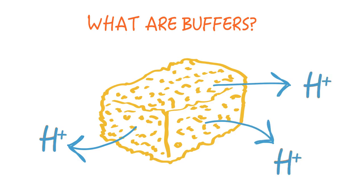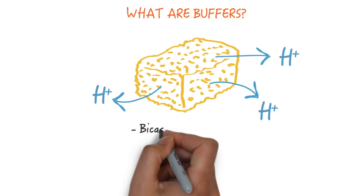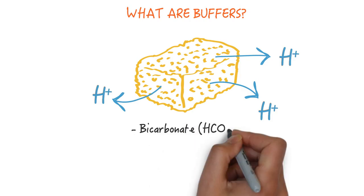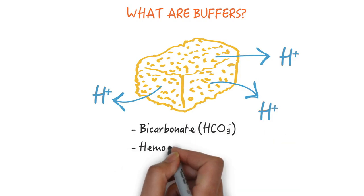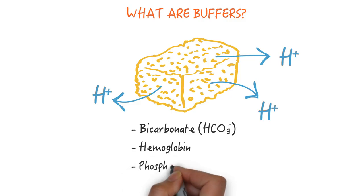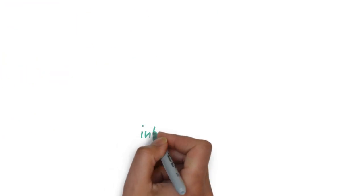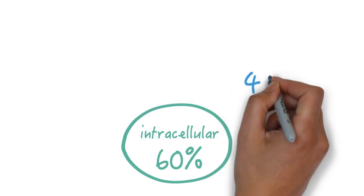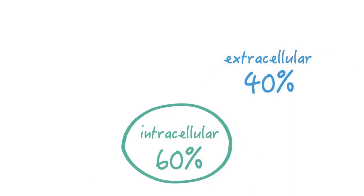The primary buffers in the body are bicarbonate, or HCO3-, hemoglobin, phosphate, and bone. 60% of buffering happens intracellularly, and 40% happens extracellularly.